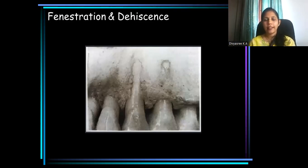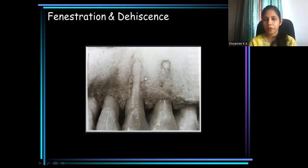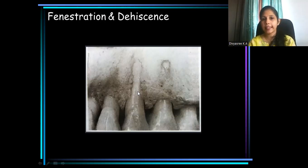Isolated areas of bone denudation are known as fenestrations — here the marginal bone is intact. Areas of denudation of bone even involving the marginal bone are known as dehiscences.